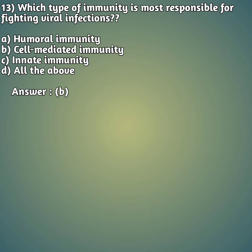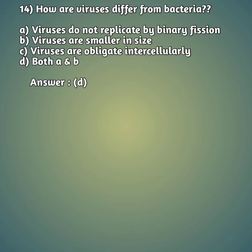Thirteenth question: which type of immunity is most responsible for fighting viral infection? Option A: humoral immunity. Option B: cell-mediated immunity. Option C: innate immunity. Option D: all of the above. For viral infections, cell-mediated immunity — option B — is most useful and responsible for fighting viral infections.